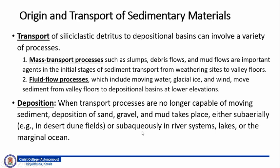This you must have heard in the case of landslides or earthquakes. These produce sudden movement of soil material — such as debris flow, mud flow, or slump — which are nothing but decomposed rock material that was formed in a place as soil and then gets removed and transported to a new place. When we talk about fluid flow processes, the agents include moving water, glacial ice and wind. These geological agents move sediment from the valley floor to depositional basin at a lower elevation.